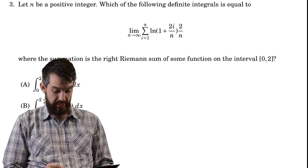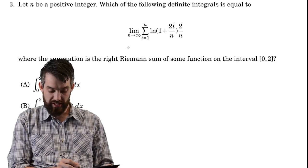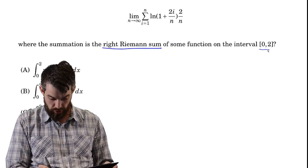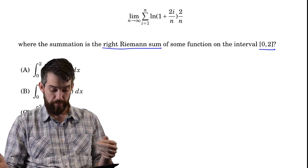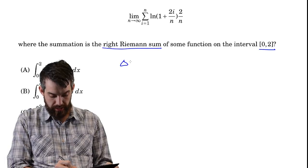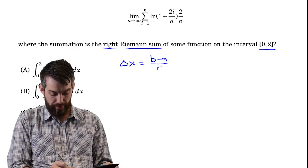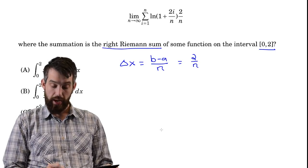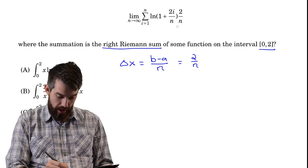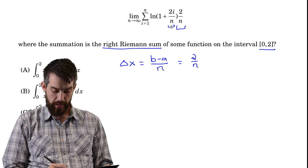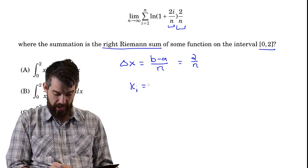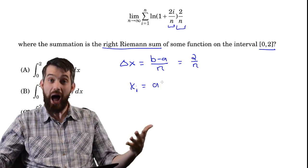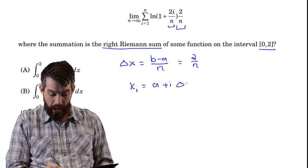Next problem: I have a limit of a Riemann sum that equals a definite integral on the interval 0 to 2 using a right Riemann sum. Two key formulas to remember: delta x equals (b − a)/n, which here is 2/n. And the right endpoint x_i equals a plus i·delta x. With a = 0 and delta x = 2/n, we get x_i = 2i/n.